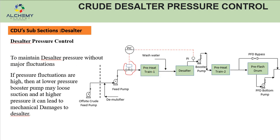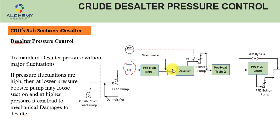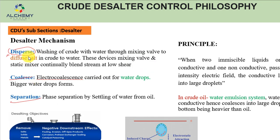After the preheat train, crude goes to the desalter where removal of impurities, salt and water happens. The first mechanism is disperse — washing of crude with water through a mixing valve to diffuse salt from the crude into the water. Wash water is injected and when the mixture passes through the mixing valve, the water and crude are thoroughly mixed. Whatever trapped or dissolved salt is present in the crude gets dissolved into the water before it enters the desalter.